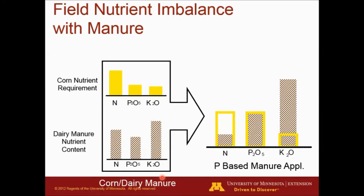In this example, we have a phosphorus-based manure application rate with the same corn nutrient requirements and the same example of dairy manure nutrient content. In this case, we match the phosphate needs, but by doing so we're going to be short on nitrogen. So we'll only be applying a reduced amount of nitrogen and will need to supplement in the spring with urea or some other commercial fertilizer to supply the nitrogen required by the crop.